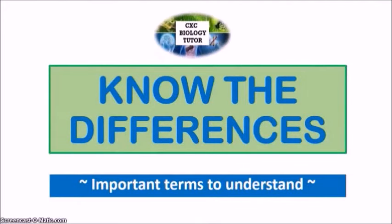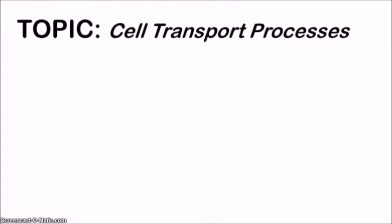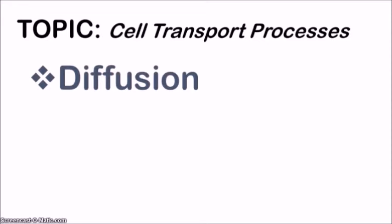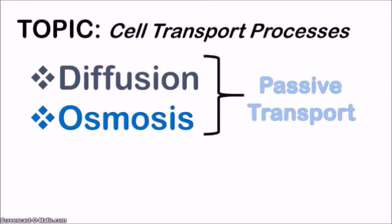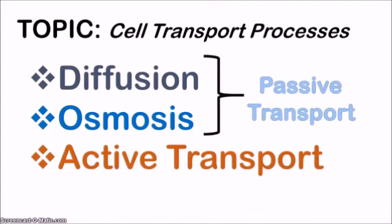Hi, it's Michelle, your CSC biology tutor, and I'd like to welcome you to the new series 'Know the Differences.' In this series I'll be looking at important terms that you really need to understand and be able to differentiate between. To kick off this series, I'll be focusing on cell transport processes: diffusion, osmosis, and active transport. Diffusion and osmosis are examples of passive transport — the molecules do not require energy to move. With active transport, you definitely need energy.